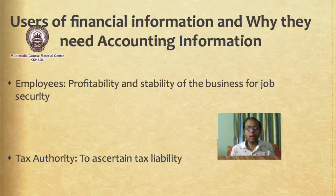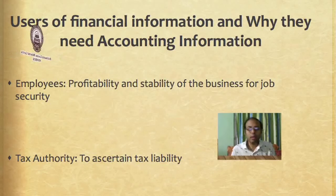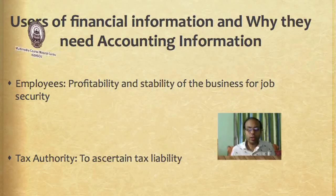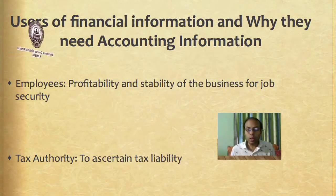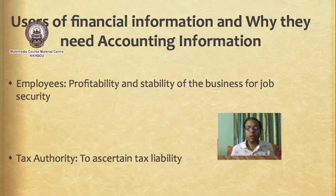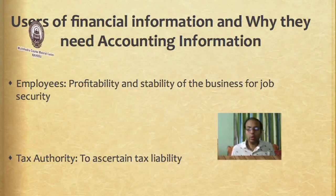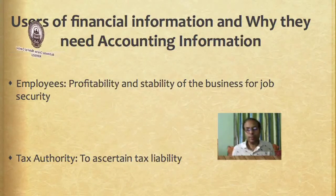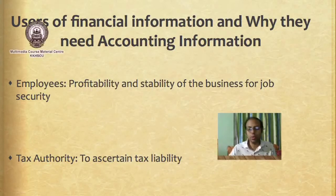The government, or more directly the tax authority, is also a user of accounting information. A joint stock company has to pay corporate tax, and this tax is calculated based on the transactions done by the company. We need a complete record of these transactions, their summarization and classification, so the tax authority uses the information generated by the accounting system. These are the different users, using accounting information for different purposes, and the accounting system generates information accordingly.